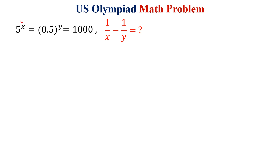The question is: 5 to the power x is equal to 0.5 to the power y is equal to 1000. What is the value of 1 over x minus 1 over y?